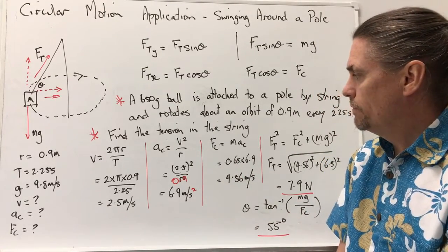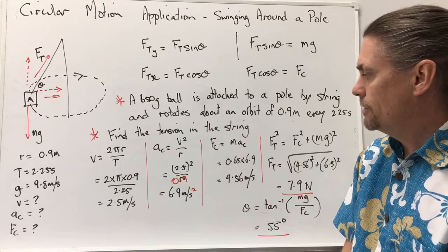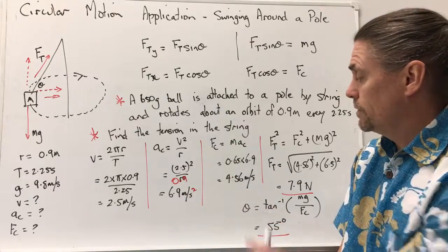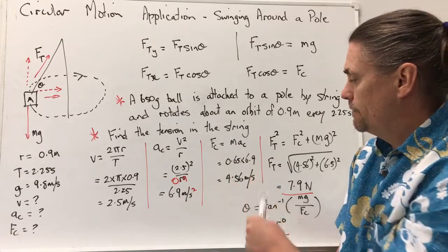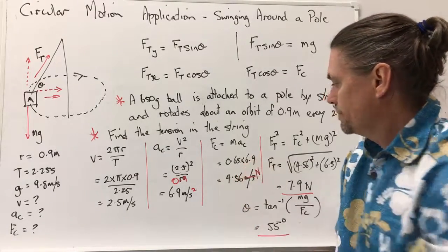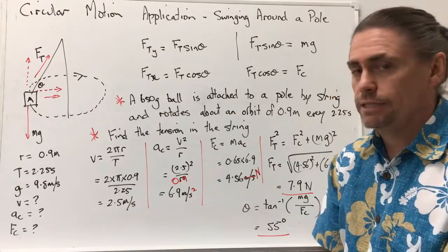Next we'll look at our centripetal force, and we know that centripetal force will be equal to mass times the centripetal acceleration. So 0.65, being the mass, times the 6.9 here gives us 4.56 newtons. So it experiences a force inward of 4.56 newtons.